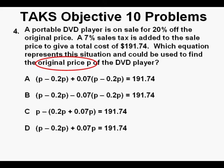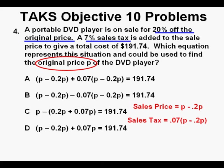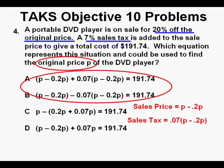First we have the variable, or really an unknown, P for the price of the DVD player. And next we see that the sale price is 20% off the original price, which is P, and that's underlined in blue. So the sale price would be P minus 20% of P, or P minus .2P. But after that we have the sales tax of 7%, which is .07 times the sale price, which is again P minus .2P. And where do we find these two expressions for the sale price and the sales tax? We find them in both answers A and B.